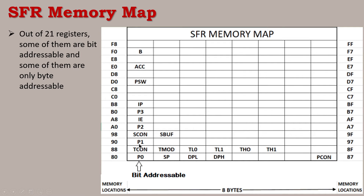The 90H address is Port 1. Address 98H is the serial control register (SCON), and 99H is the serial buffer register (SBUF). Address A0H is Port 2. Address A8H is the interrupt enable register (IE). Address B0H is Port 3. Address B8H is the interrupt priority register (IP). Address D0H is the program status word (PSW). E0H is the accumulator register A. F0H is register B.